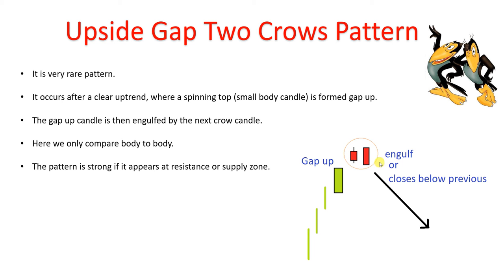The second candle is important. The second candle would be either engulfing or closes below the previous close. See, the spinning top's close will be at the bottom. The next candle's close should be below this. If it is an engulfing candle, then 100% its close will be below this. Or possibly it's not an engulfing candle, but the second candle is somehow closing below the previous close — then we can say this is an upside gap two crows pattern.